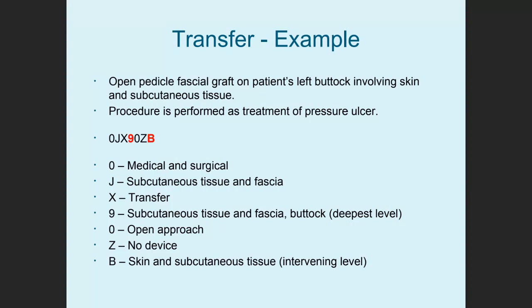Here's an example: open pedicle fascial graft on the patient's left buttock involving skin and subcutaneous tissue, as treatment for a pressure ulcer. Medical and surgical zero, subcutaneous tissue and fascia J, X transfer, nine for subcutaneous tissue and fascia buttock — the deepest level — open approach, no device. They went through the skin and subcutaneous tissue to get to the fascia, so the qualifier is B. The complete code is 0JX90ZB.